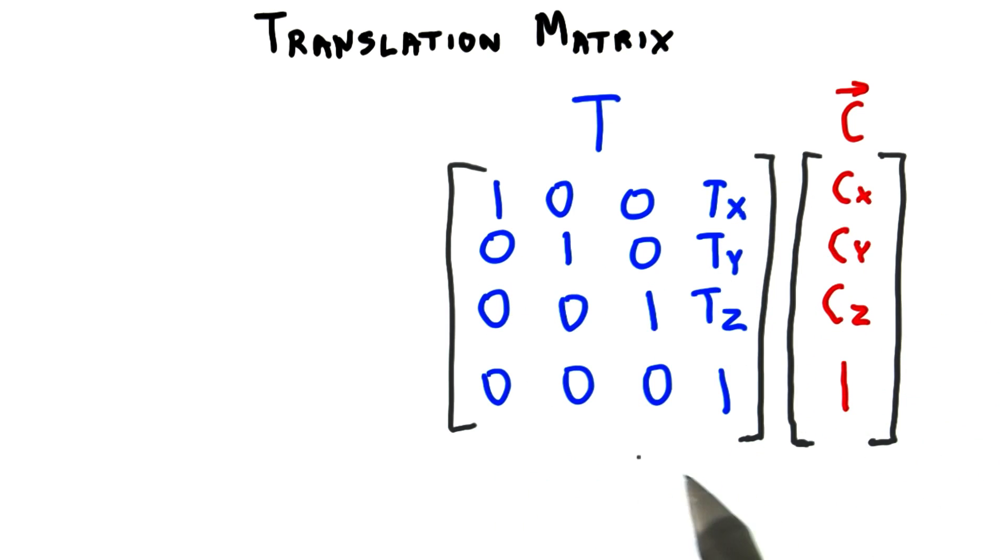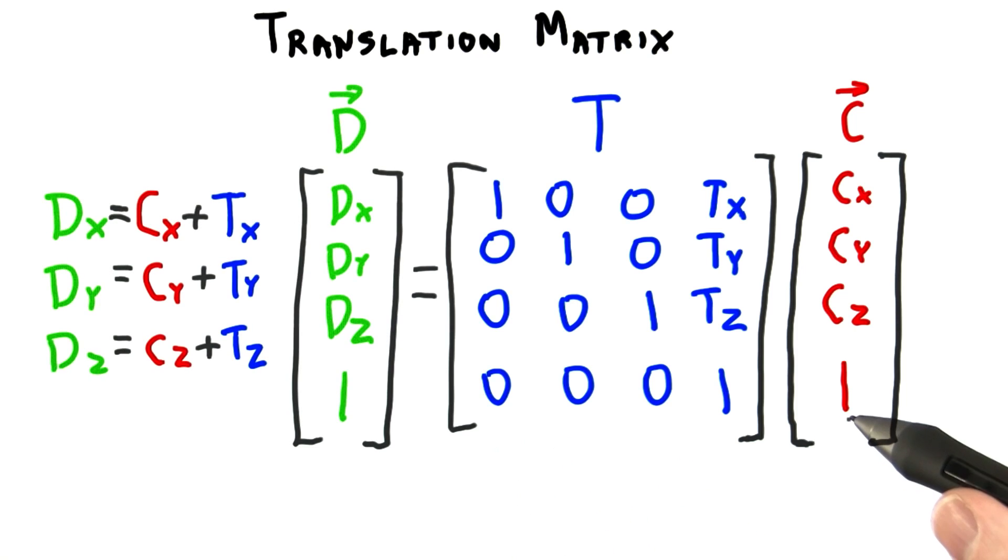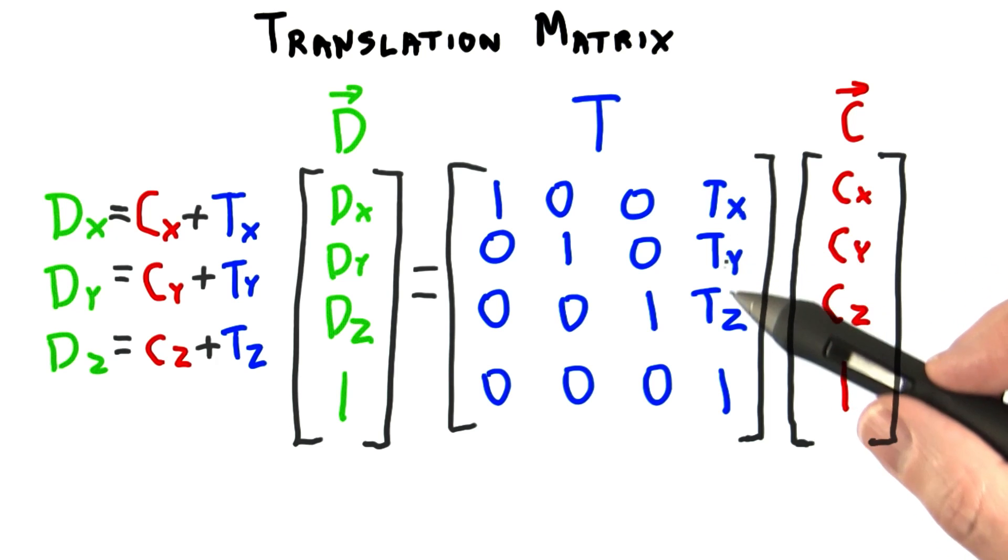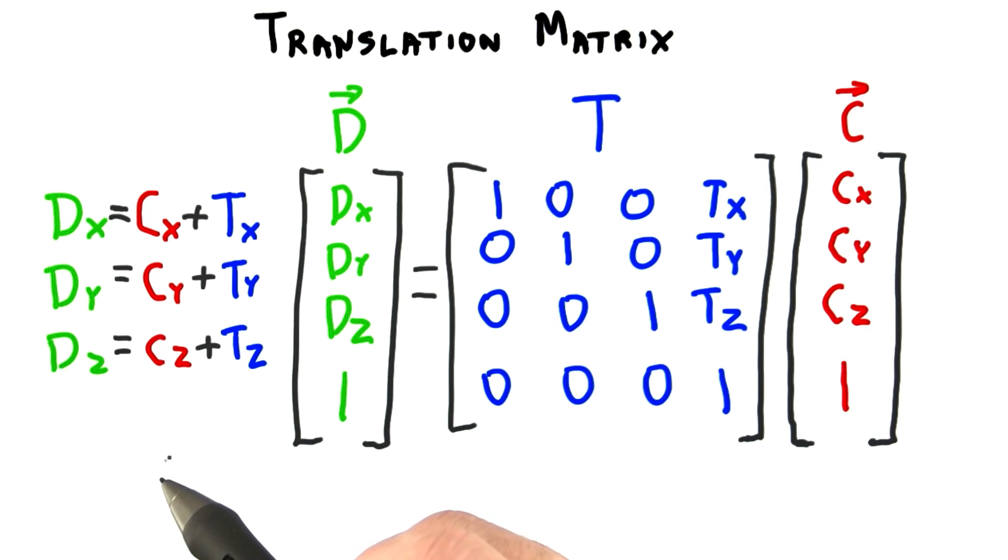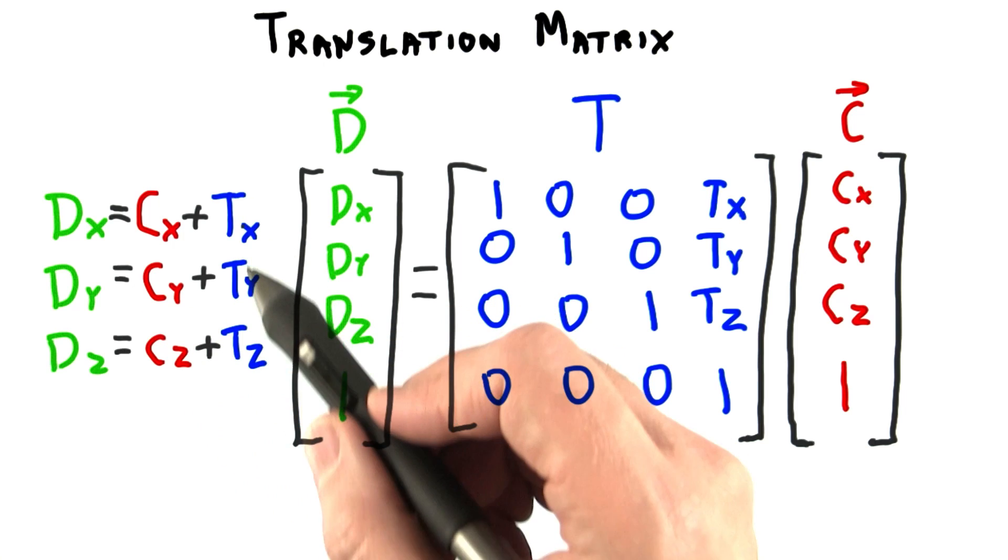The rest of the matrix looks the same as the identity matrix. If you multiply a point by this matrix, the one coordinate in the last position of the vector multiplies each translation value in turn. This has the effect of taking the original point and adding the translation to it.